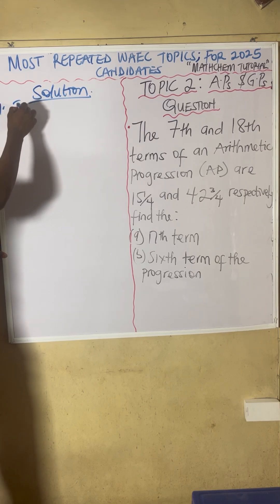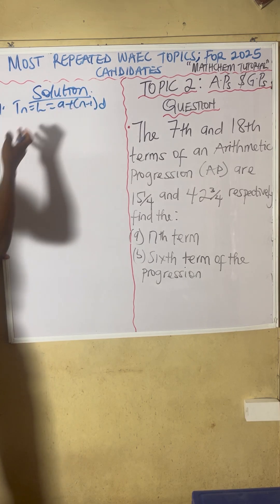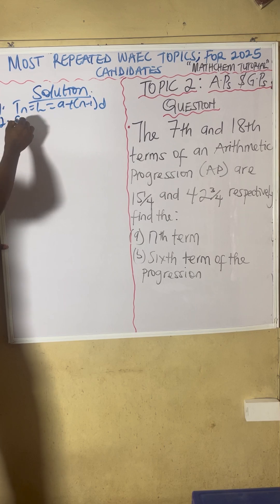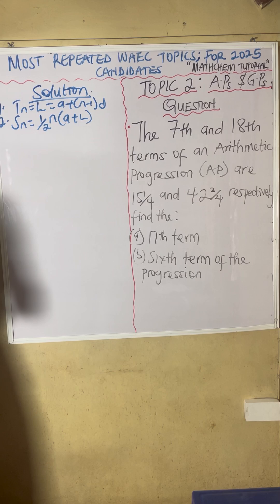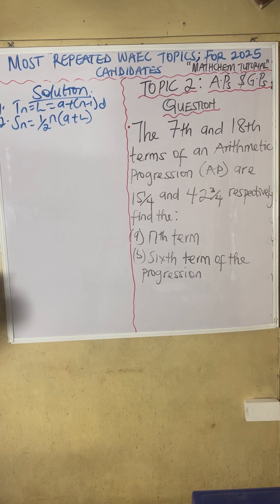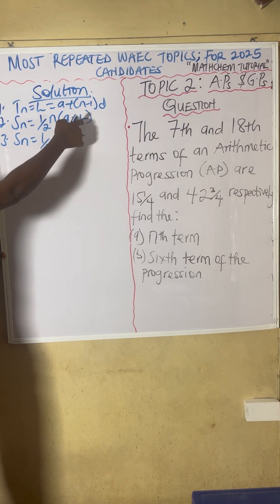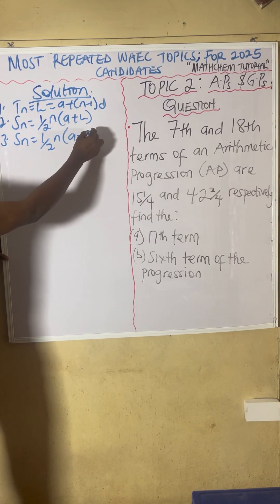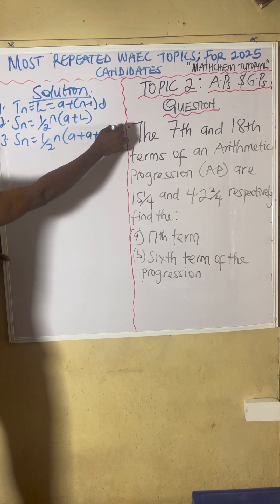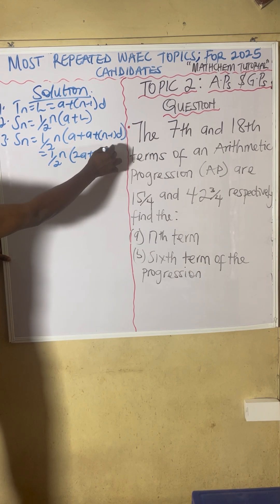Formula 1 is Tn, which equals A plus (N minus 1)D. Most students know this formula. Another formula is for the sum of AP: Sn equals one-half times N, open bracket, A plus the last term. The last term is A plus (N minus 1)D. By the time you solve this, that'll be one-half times N times bracket 2A plus (N minus 1)D.